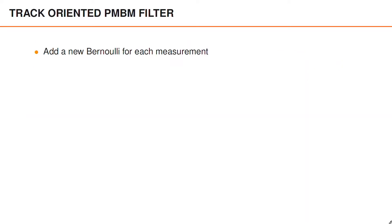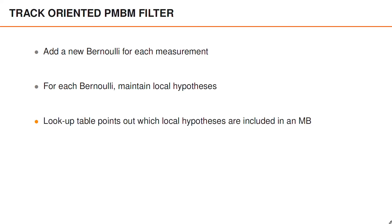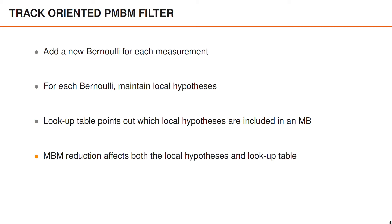To summarize, in a track-oriented PMBM filter we initiate a new Bernoulli for each measurement. We maintain local hypotheses for each Bernoulli. We have a lookup table that points out for each multi-Bernoulli which local hypotheses are included. Later we will see how the local hypotheses and the lookup table are affected by the multi-Bernoulli mixture reduction.